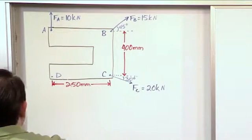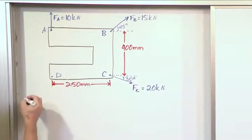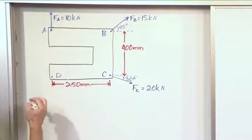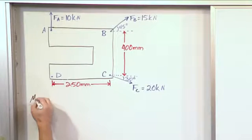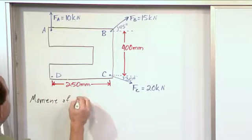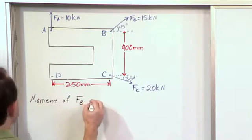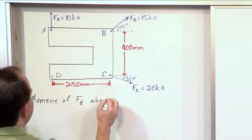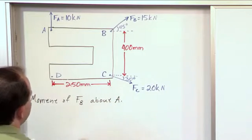All right, so what we want to do first for part A—we're going to have a few different parts here to try to get as much as we can out of this problem. We want to find the moment of force F sub B about the axis of rotation, which is point A.